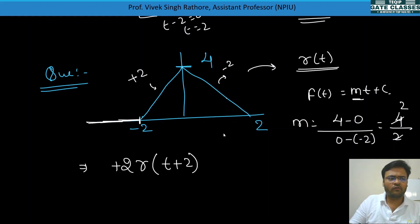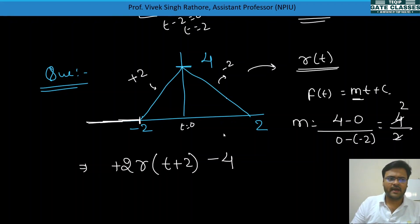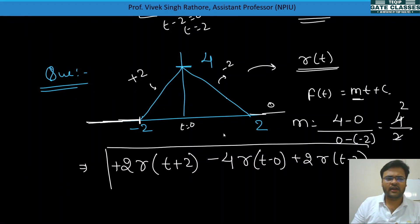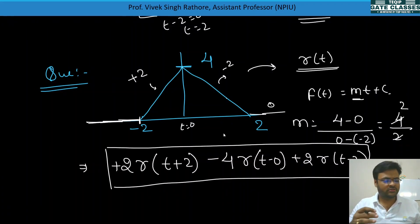At t = 0 the slope changes from +2 to −2, so the change in slope is −2 − 2 = −4. We add −4·r(t). At t = 2, slope changes from −2 to 0, so we add +2·r(t − 2).